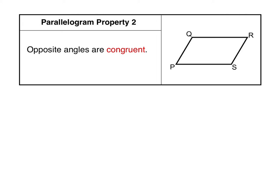Parallelogram property number two says that opposite angles are congruent. Opposite angles are angles that are across from one another. So angle P and angle R are opposite angles and they are congruent to each other. Angle Q and angle S are also opposite angles, so they're congruent to each other as well. In a diagram, congruent angles are marked with arc markings. P and R each get one arc, and Q and S get two curved lines. Both pairs of opposite angles are congruent in any parallelogram.